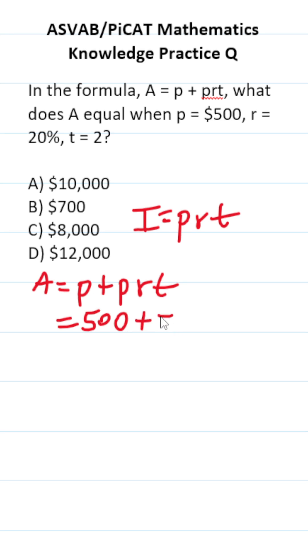So this becomes 500 plus 500 times 20 percent as a fraction is one-fifth. I'm going to write it as one-fifth because it's going to make this math a lot easier to do.